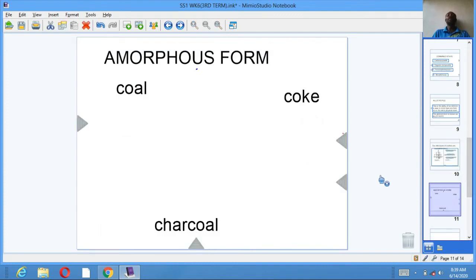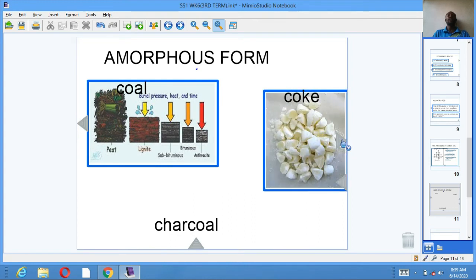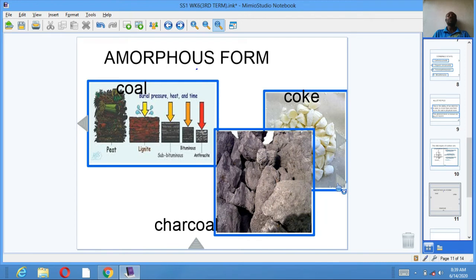Other allotropes are the amorphous form. We have coal, coke (which is of two types: white hot coke and red hot coke), and we also have charcoal.